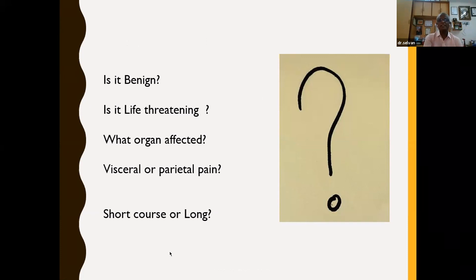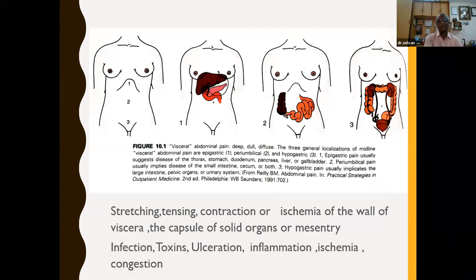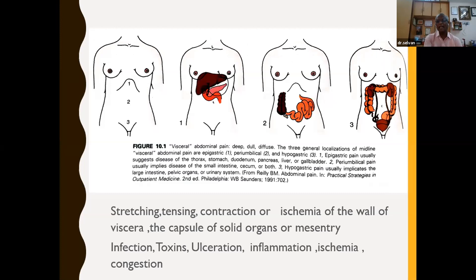Visceral abdominal pain is deep, dull, and diffuse. The three general localizations of midline abdominal pain are: epigastric, periumbilical, and hypogastric. Epigastric pain suggests disease of the thorax, stomach, duodenum, pancreas, liver, and gallbladder. Periumbilical pain implies disease of the small intestine, cecum, or both. Hypogastric pain implicates the large intestine, pelvic organs, or urinary structures. This pain occurs due to stretching or tension of the capsule of solid organs or mesentery, caused by infections, toxins, ulceration, inflammation, ischemia, and congestion.